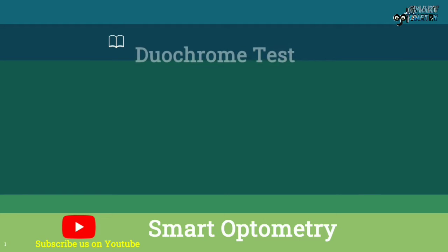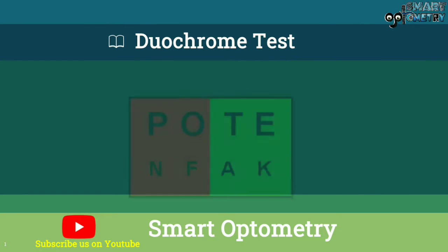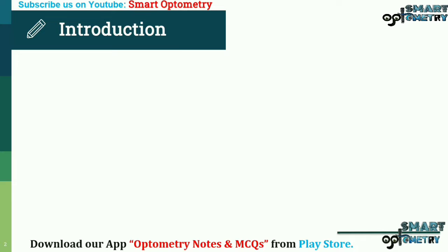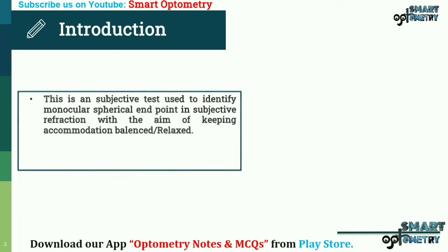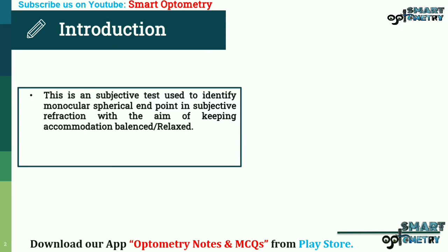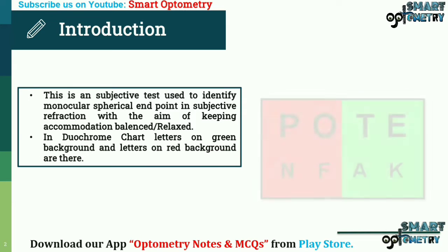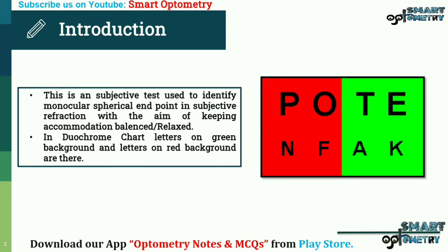Today I will discuss the duochrome test. This is a subjective test used to identify the monocular spherical endpoint in subjective refraction, with the aim of keeping accommodation balanced or relaxed. In the duochrome chart, there are letters on a green background and letters on a red background.